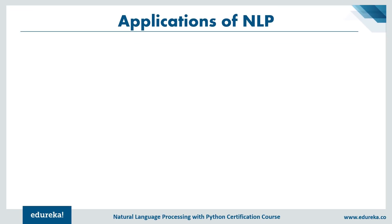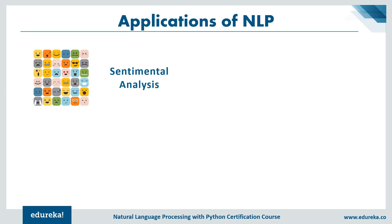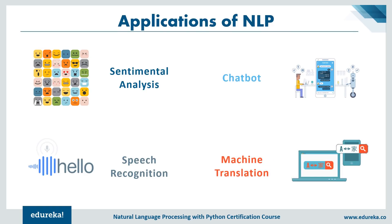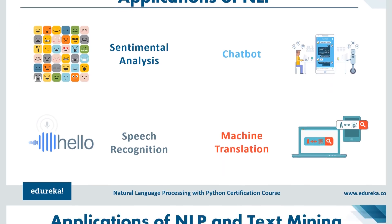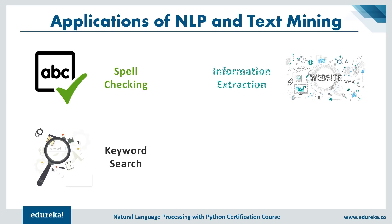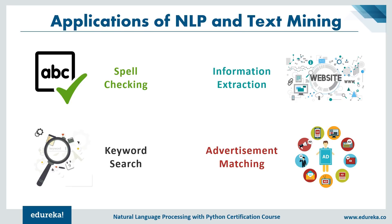The various applications of NLP include sentiment analysis, speech recognition including voice assistants like Google Assistant, Cortana, and Siri, chatbot implementation used in customer care chat services, and machine translation such as Google Translate which translates data from one language to another in real time. Other applications include spell checking, keyword search, extracting information from websites or documents, and advertisement matching, which recommends ads based on your browsing history.